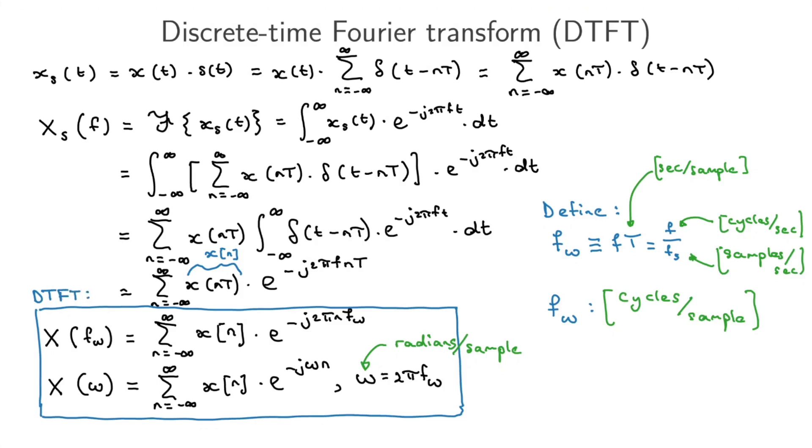These things, both of these actually, are periodic. And that shouldn't surprise us. But they have a periodicity. x(f_omega) has a period of, it repeats every one cycle per sample. So you can actually go and prove that this thing is periodic. It basically repeats. And in terms of angular frequency, you can go and convince yourself that it repeats with a period of 2π. Why do I say this is not that surprising?